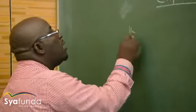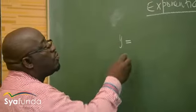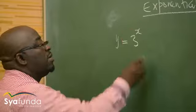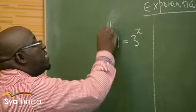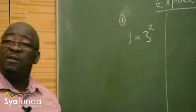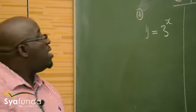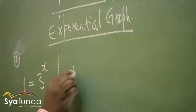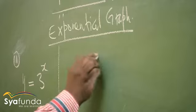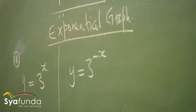The first one is y = 3^x. That's the first graph that I want us to look at. The second graph is y = 3^(-x). I want you to see the effects of these graphs.